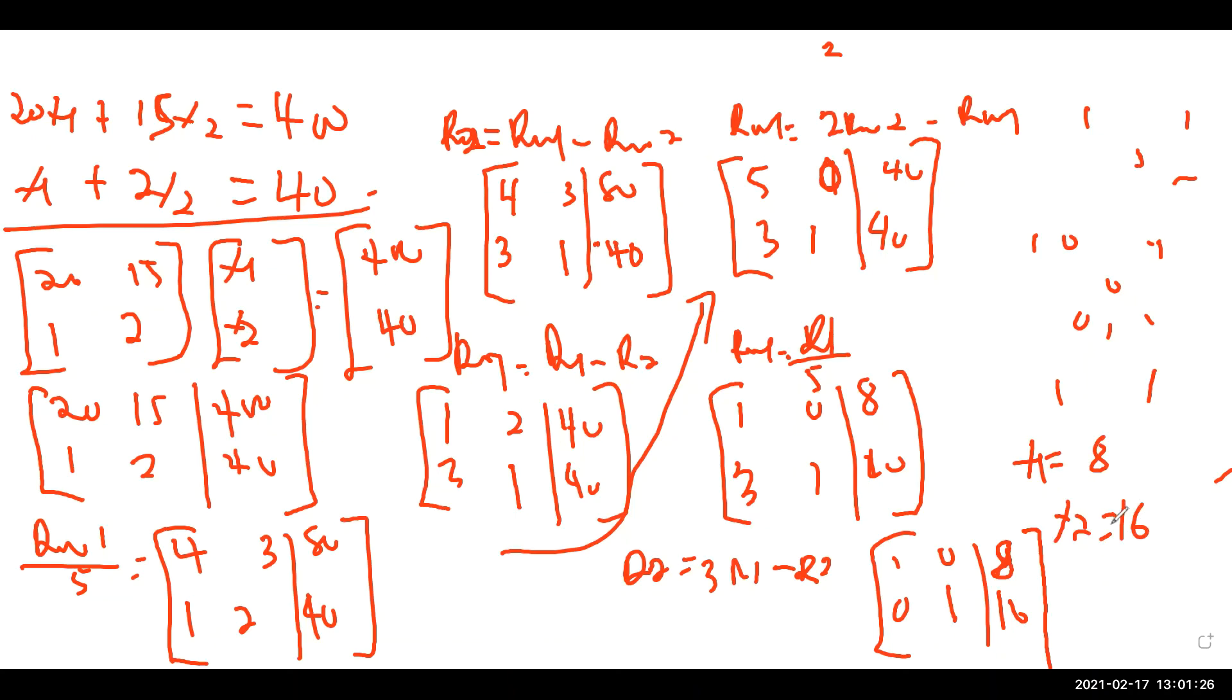If you substitute them into this equation, it should make meaning. So eight plus 32 should give you 40. Then respectively, if you put them into this equation, it should give you what? 400.